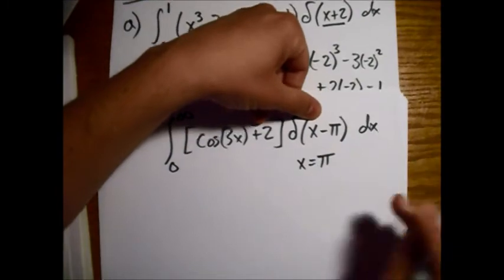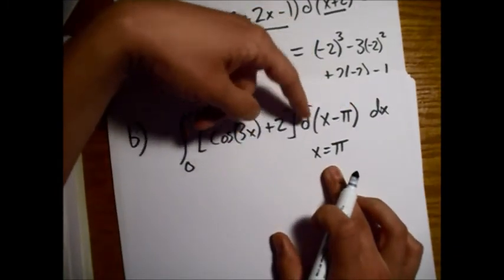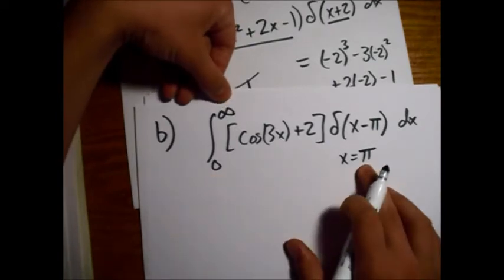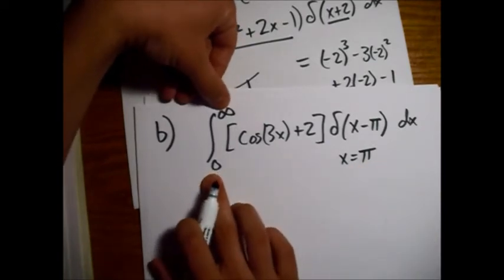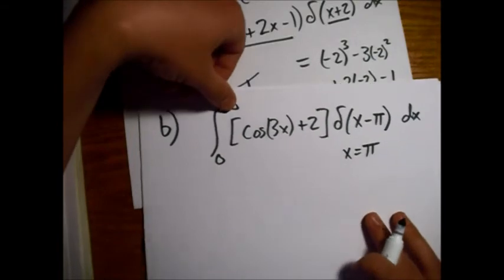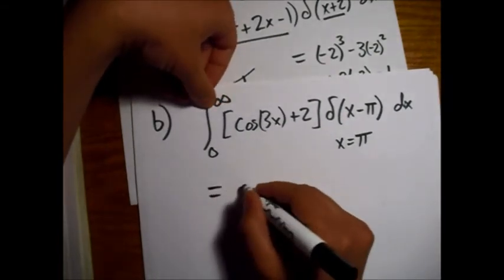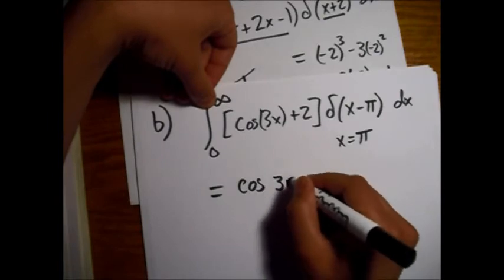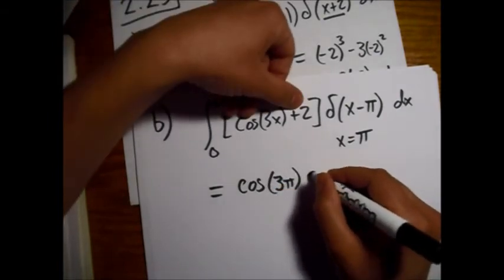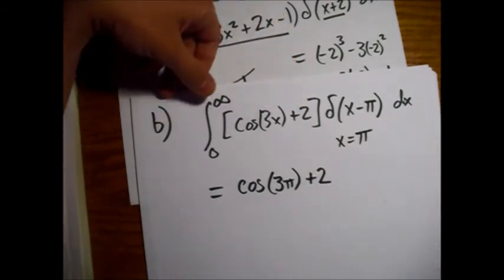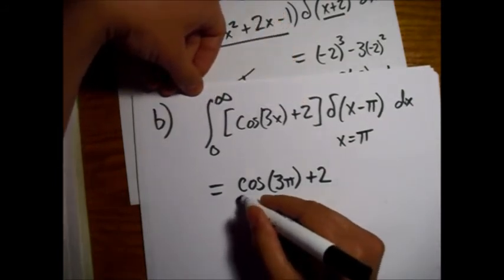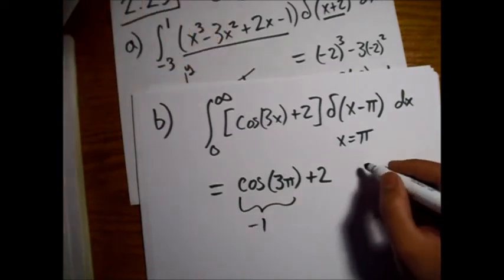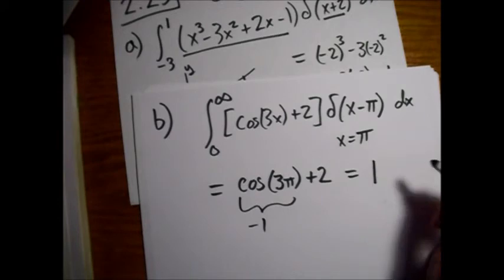So x equals pi is the location that we're concerned with. And we look at our limits of integration, and we say, is pi in between 0 and infinity? Yes, it is. So our answer is cosine of 3 pi plus 2. Cosine of 3 pi is minus 1, and so our final answer is 1.